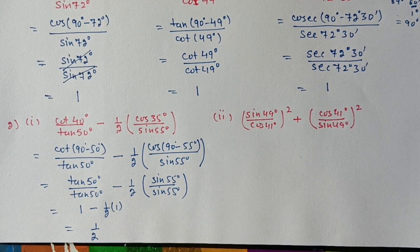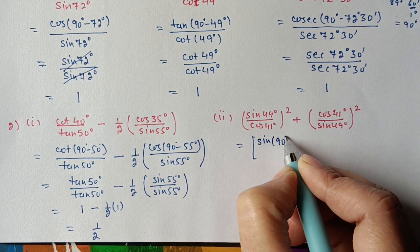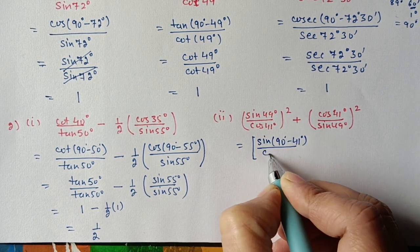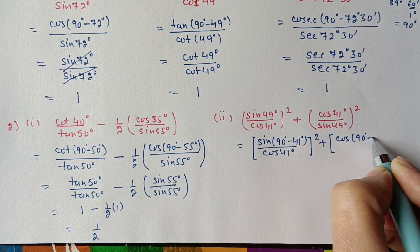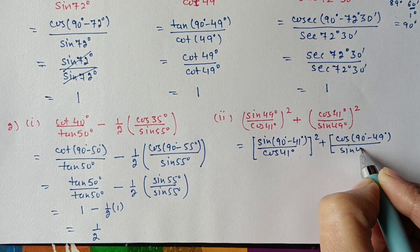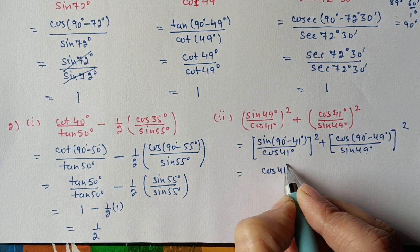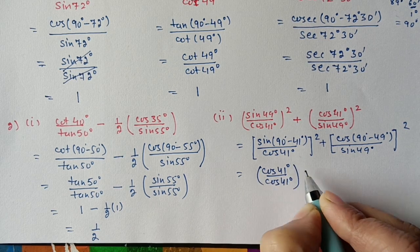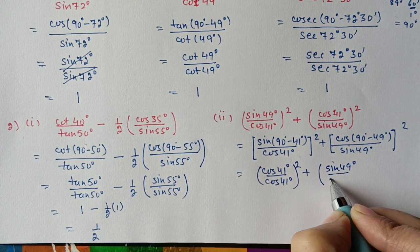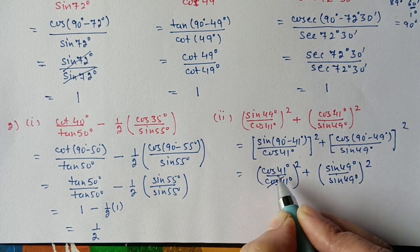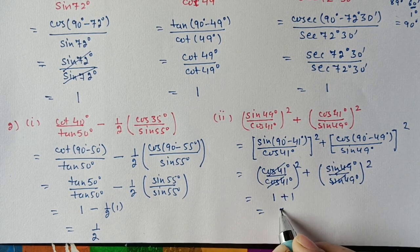Second part: (sin 49° / cos 41°)² + (cos 41° / sin 49°)². Write sin 49° = sin(90° − 41°) = cos 41°, so the first term becomes (cos 41° / cos 41°)² = 1² = 1. Similarly, sin 49° cancels in the second term giving 1² = 1. Therefore, 1 + 1 = 2.